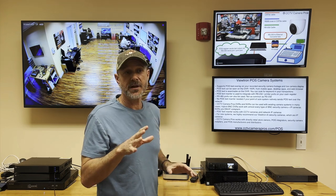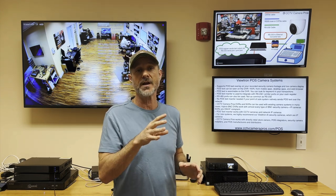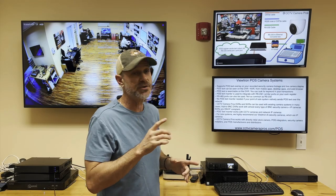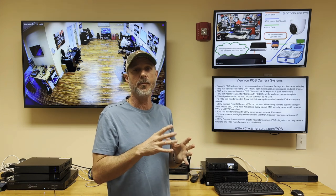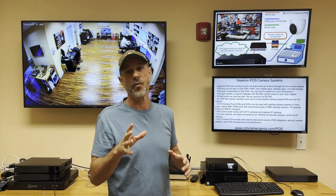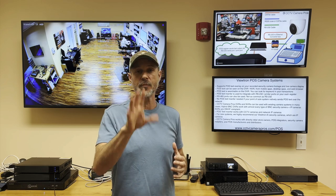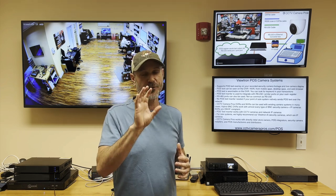Some point-of-sale systems support sending the point-of-sale text over the network natively. If you have one of those systems, you don't even need the POS text capture box. You could just connect your point-of-sale to the same network as your Viewtron DVR and NVR, and we can directly capture that point-of-sale text over the network. Using the text capture box is more common because a lot of point-of-sales don't support natively sending that text over the network, or there's very limited tech support from your POS manufacturer, making it difficult to figure out.